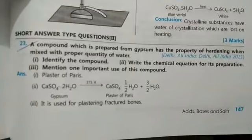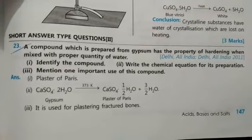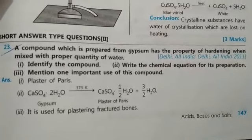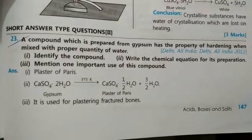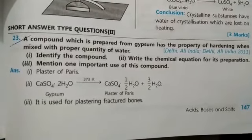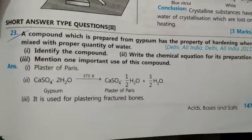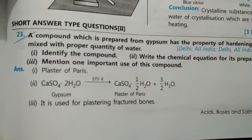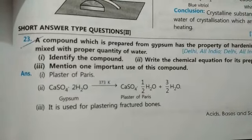This question came from 2009. A compound prepared from gypsum hardens when mixed with proper quantity of water — identify it and write the chemical equation for its preparation. It is Plaster of Paris. Gypsum (CaSO4·2H2O) heated at 373 K gives CaSO4·½H2O + 3/2 H2O. It is used in hospitals for plastering fractured bones and for making statues and toys.